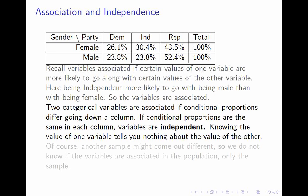Being Independent is more likely for a woman than for a man, so the variables are associated. In general, you look in each column, and if there's a difference in any column, they're associated. If 30% of women were Independent and 30% of men were Independent, knowing gender wouldn't tell you anything about whether somebody's Independent, so they'd be unrelated or independent. If in each column the conditional proportions are the same, then the variables are independent, and knowing one variable would not tell you anything about the other. Independent is the opposite of associated.